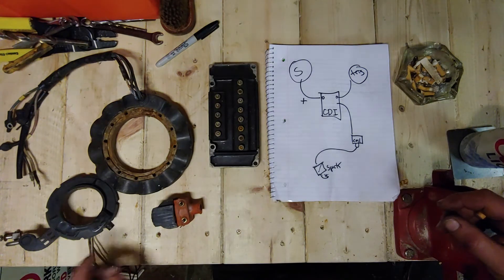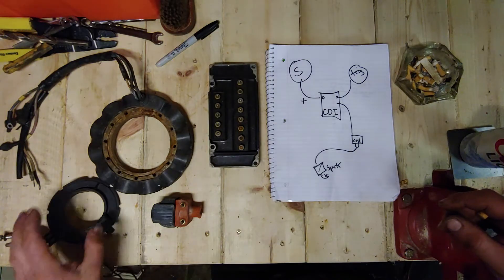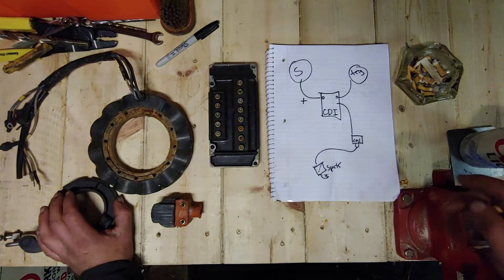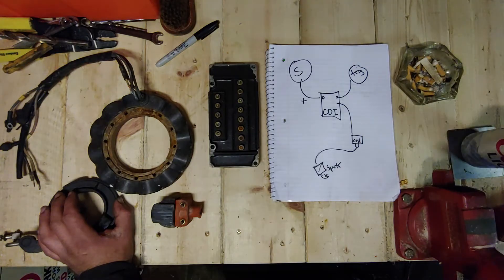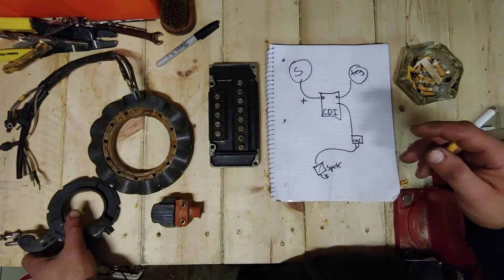But it can't unless this says it can. So a two-stroke outboard doesn't have a camshaft, and because it doesn't have a camshaft, it can't rely on mechanical timing.